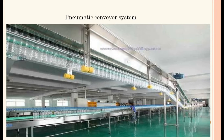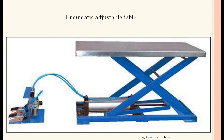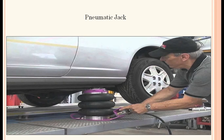Then the pneumatic conveyor system — in the conveyor, a lot of components are moving. Then the pneumatic adjustable table: the height can be adjusted using compressed air. The cylinder rod can be extended or retracted and accordingly the height of the table is adjusted. There are pneumatic lines and different components like direction control valves and FRL units, and a pedal-operated system can also be seen.